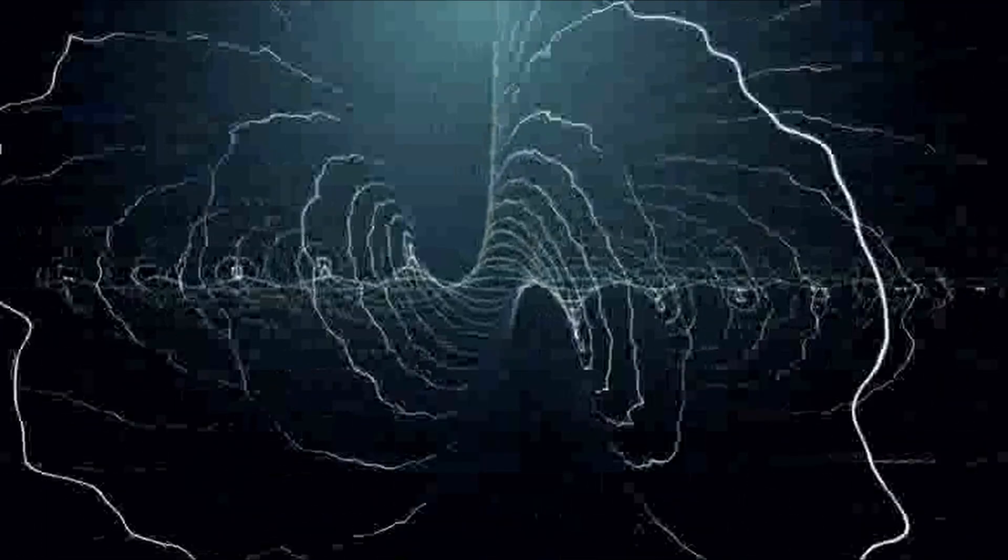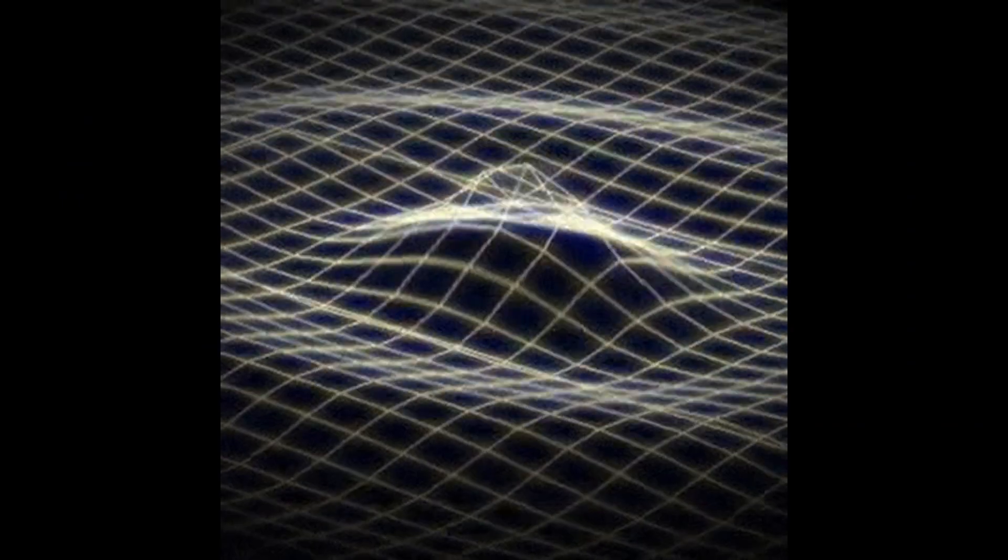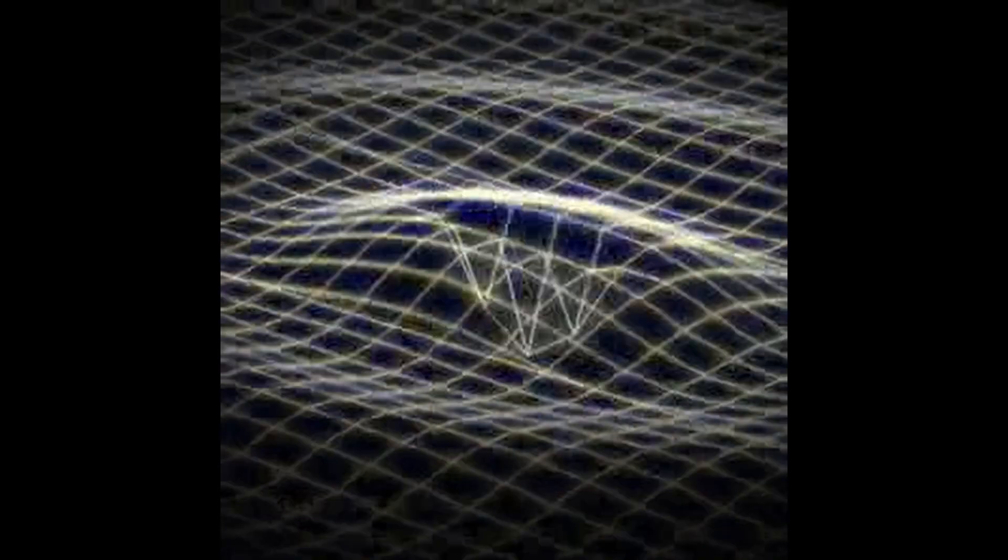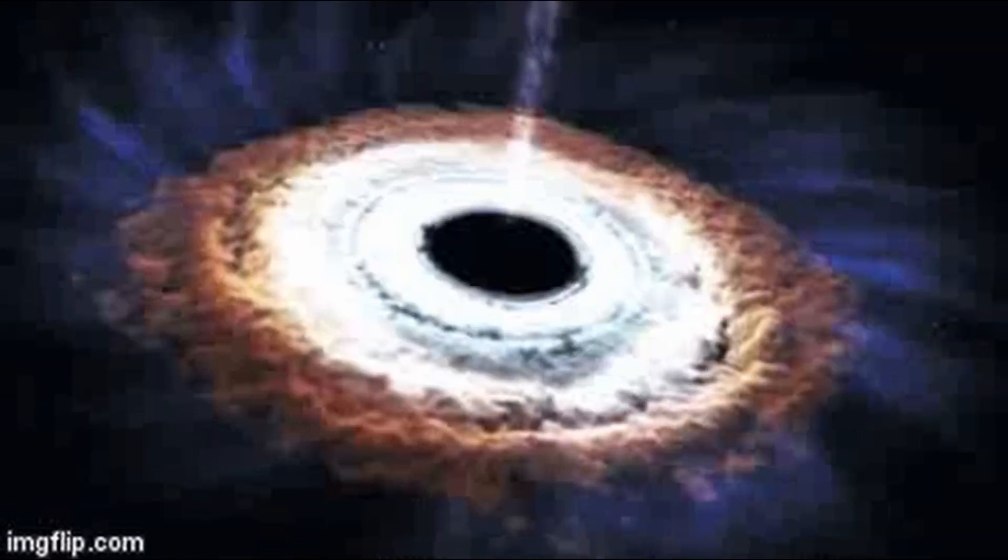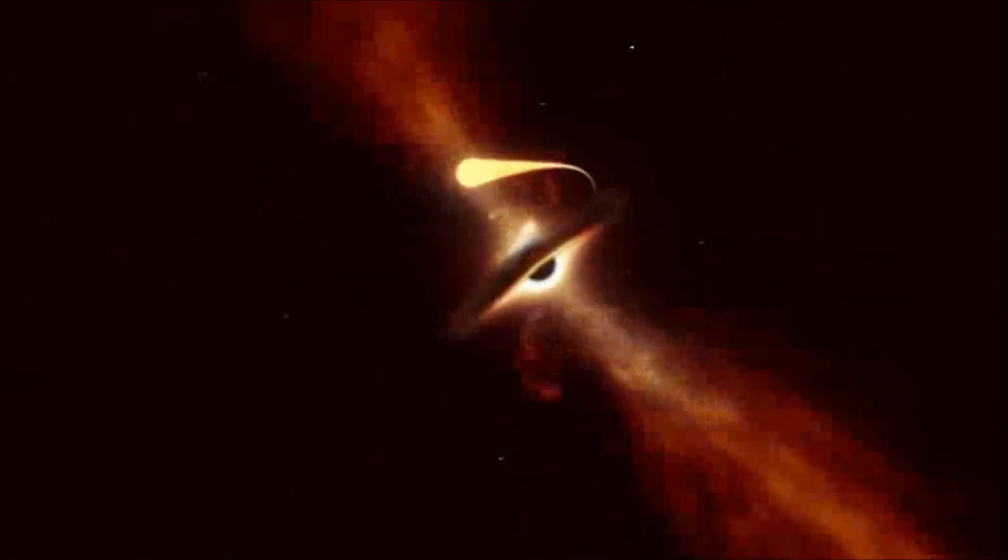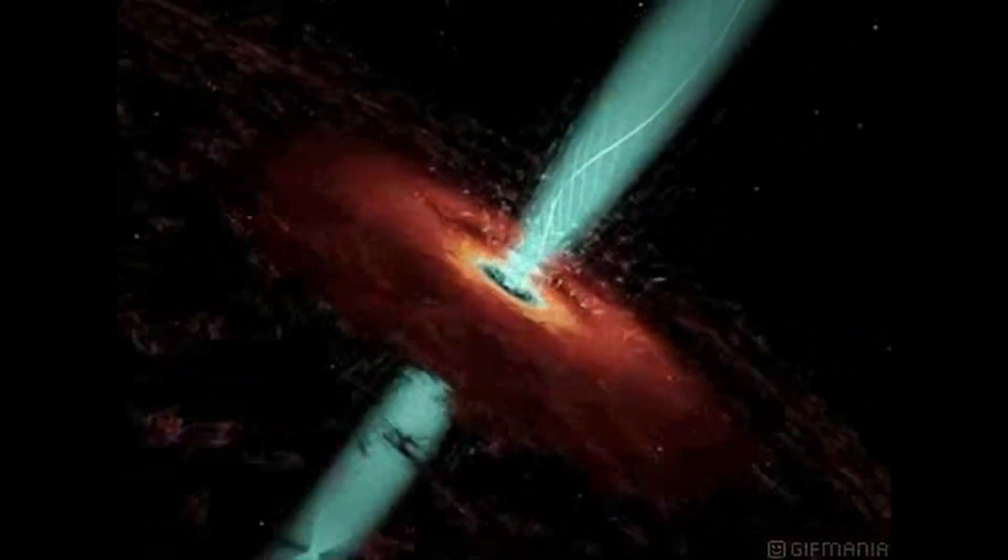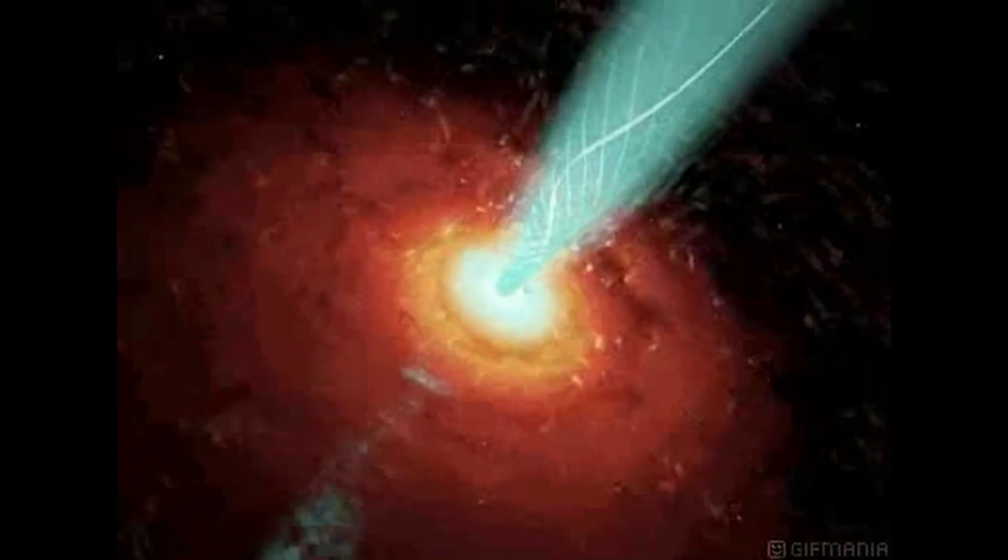One possibility is that white holes could be a consequence of the fundamental properties of space-time. In some theoretical models, it is postulated that the fabric of space-time itself can undergo quantum fluctuations, giving rise to the creation of pairs of particles and anti-particles. These fluctuations occur near the event horizon of a black hole, where one particle falls into the black hole while the other escapes as radiation. It has been suggested that under certain conditions, the escaping particle could manifest as a white hole.